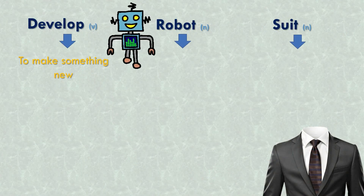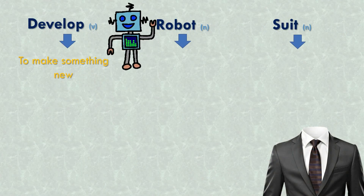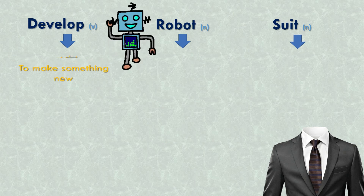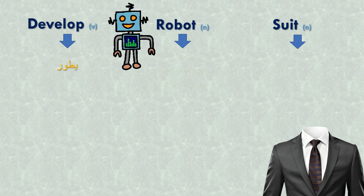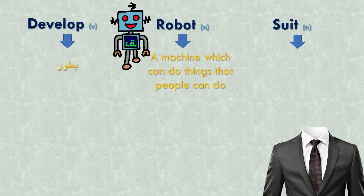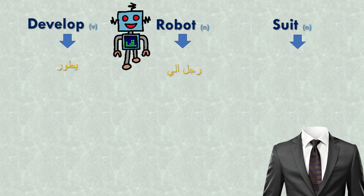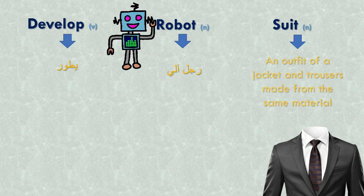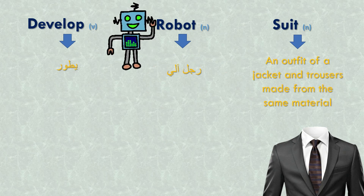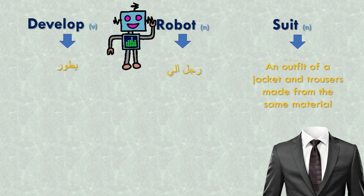'Develop' means to make something new. A 'robot' is a machine which can do things that people can do. And a 'suit' is an outfit of a jacket and trousers made from the same material.